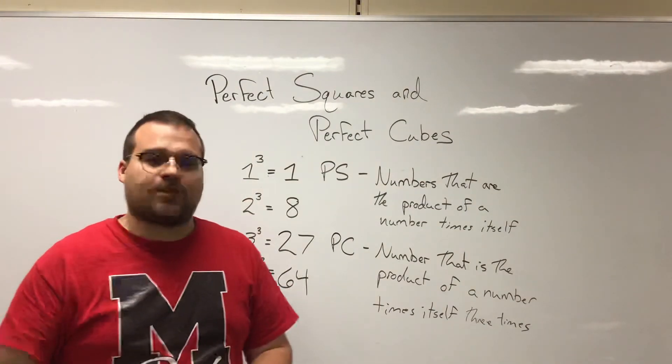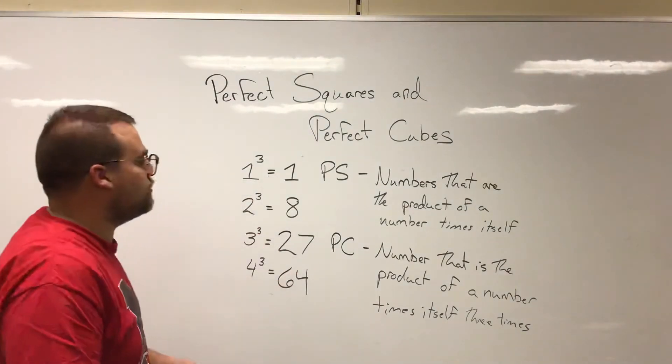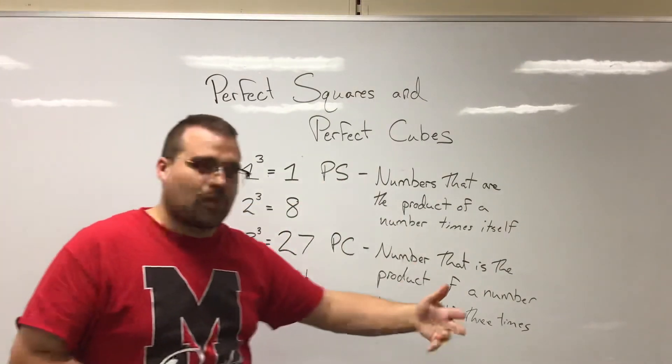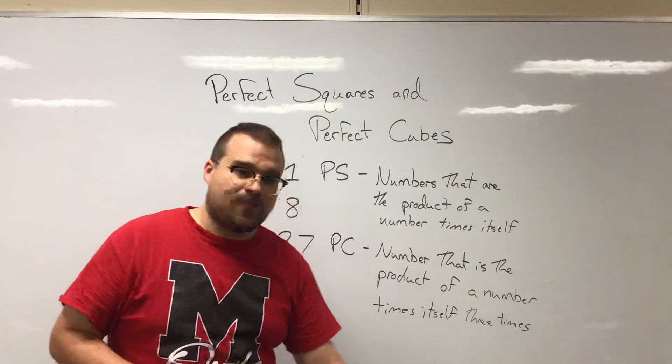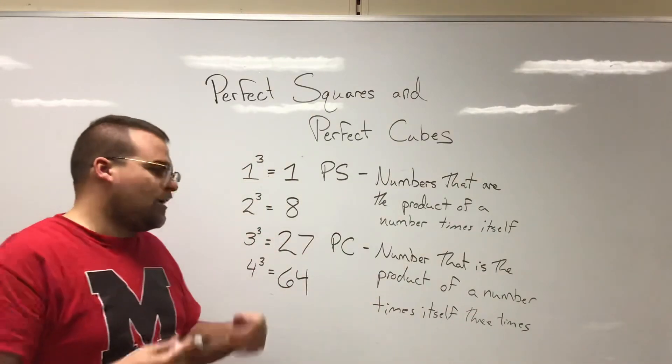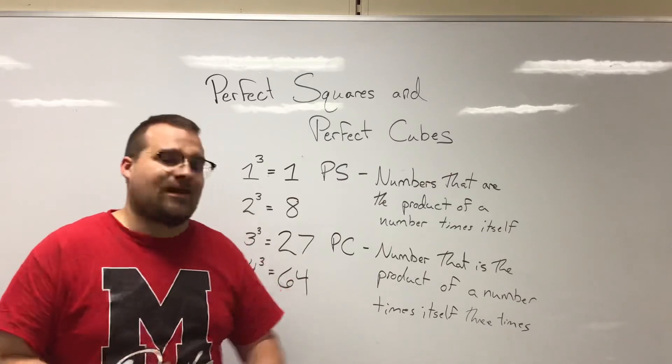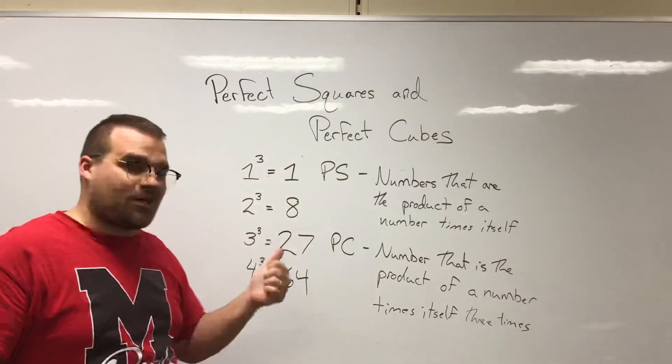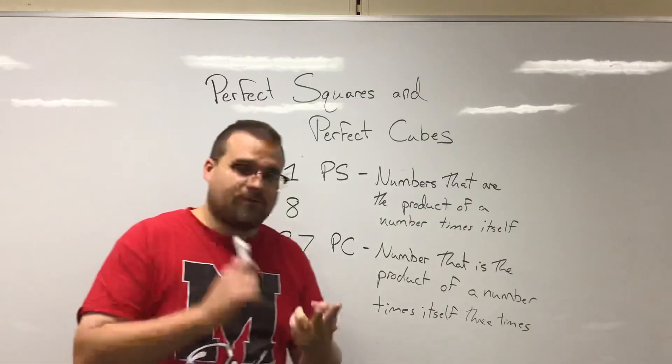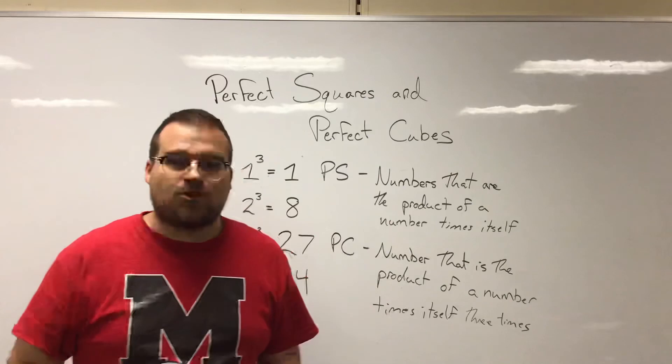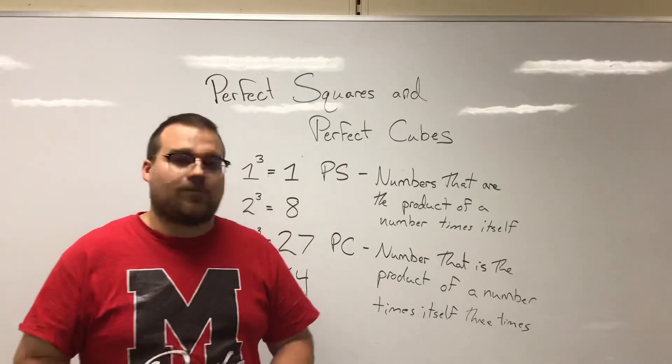These are perfect squares and perfect cubes. Again, perfect squares being the numbers that are a product of a number times itself, and a perfect cube being a number that is a product of a number times itself three times. So these are our perfect cubes, and the ones we had up here before - one, four, nine, sixteen, twenty-five, thirty-six, so on and so forth - those are our perfect squares.